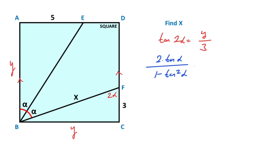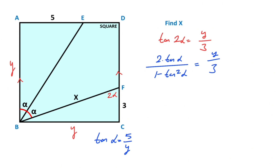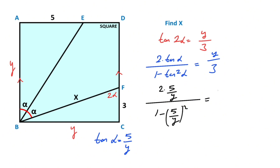This equals y over 3. Now if you focus on the other triangle, the tangent of alpha there equals 5 over y. So let's plug this into the equation: 2 times (5 over y) divided by 1 minus (5 over y) squared equals y over 3.